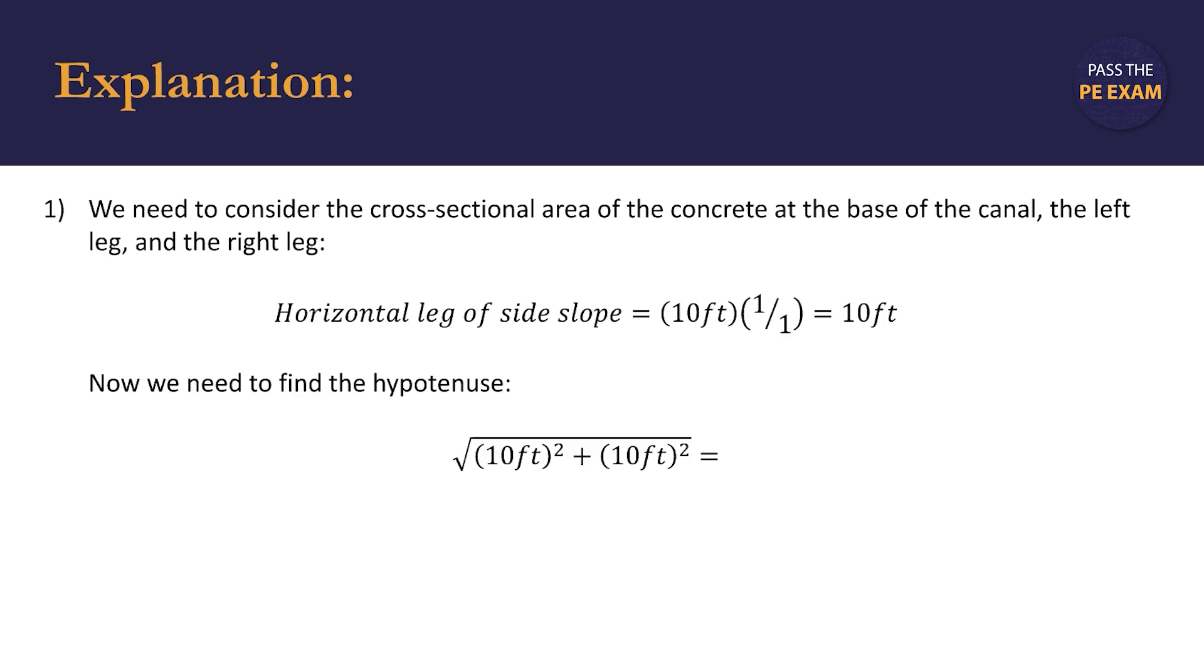In this case, our slope is 1 to 1, and since we're multiplying by 1, the horizontal leg is the same distance as the vertical leg: 10 feet. Using this, we can find the hypotenuse, which is root 10 feet squared plus 10 feet squared. So the distances of both legs.